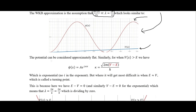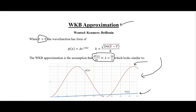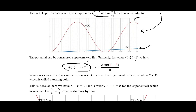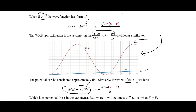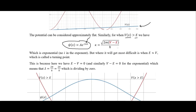In the next video we'll be talking about the region where the potential is greater than the energy. In that case we have a solution where the main thing to notice is that it does not have the imaginary component in the exponent like we do in the classically allowed region. That is because we will have exponential decay when the potential is greater than the energy, so the wave function will just decay to zero.